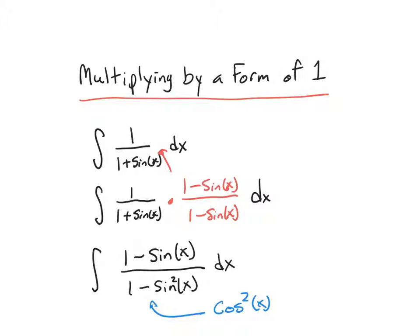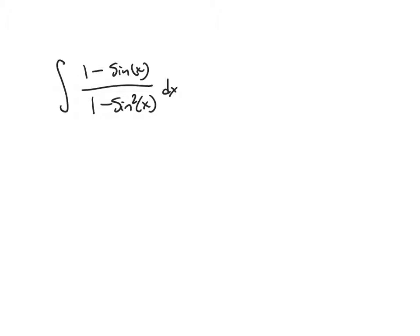Let's go to the next screen and rewrite this in its new form. We had this integral and we want to use that Pythagorean identity to rewrite it as 1 minus sine of x over cosine squared of x. I know just by looking at this it doesn't look like that helped us, but when we have a fraction like this — a rational function — one of the techniques we've learned is to separate it into two fractions. So we're going to split it on this minus sine term.